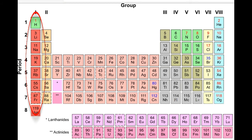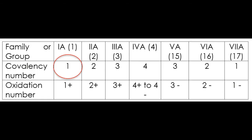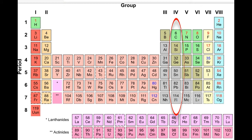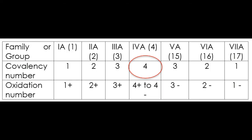Now look at your periodic table. What are the elements in Family 1 or Group 1A? These are lithium, sodium, potassium, rubidium, cesium, and francium. From the table, their covalency number is one, which means they can only have one bond, and an oxidation number of positive one. This indicates that they can give up only one electron.